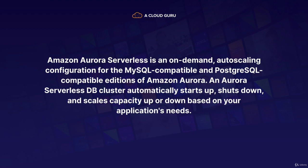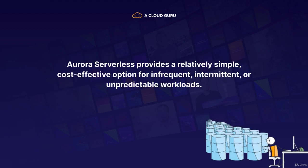Let's talk briefly about Amazon Aurora Serverless, because this will definitely come up in your exam. This is basically an on-demand auto-scaling configuration for MySQL-compatible and PostgreSQL-compatible editions of Amazon Aurora. An Aurora Serverless database cluster automatically starts up, shuts down, and scales capacity up or down based on your application's needs. It provides a relatively simple, cost-effective option for infrequent, intermittent, or unpredictable workloads. So if you've got a scenario-based question where you want to save as much money as possible and you have no idea when people are going to be accessing your website, that is where you're going to use Aurora Serverless.